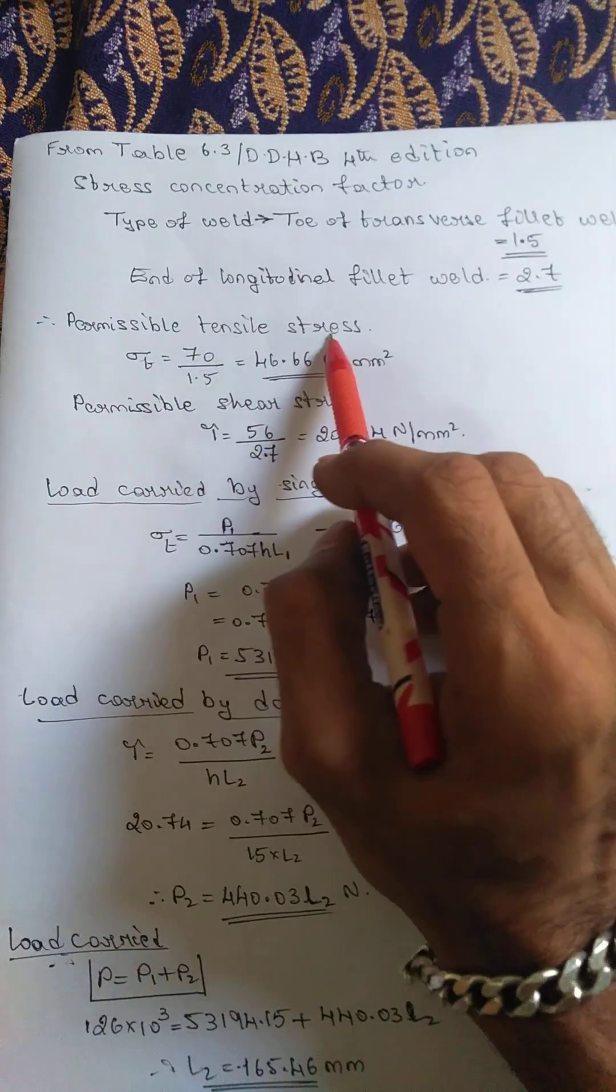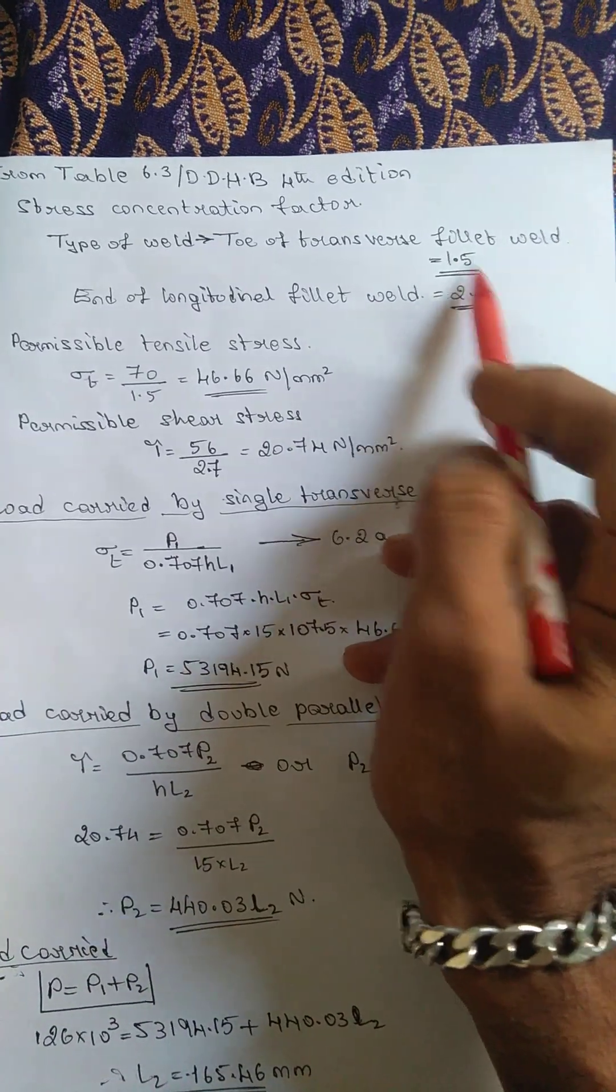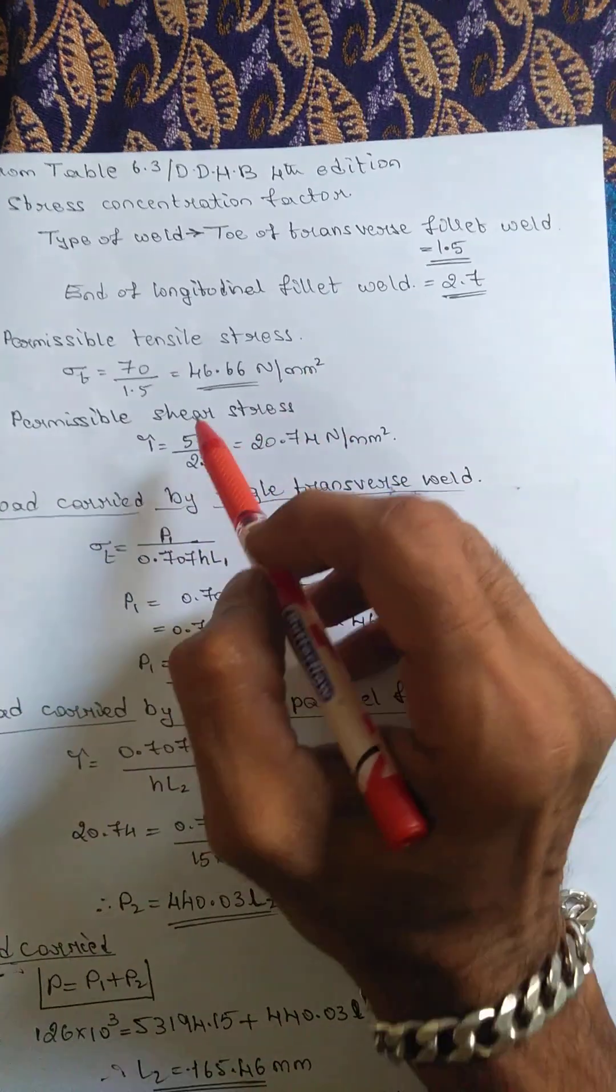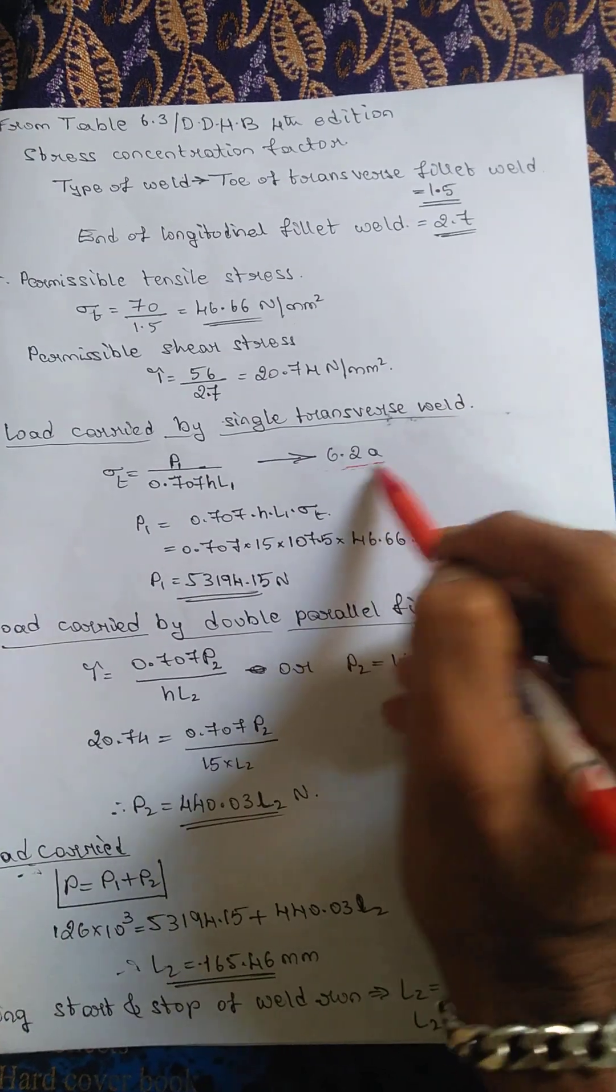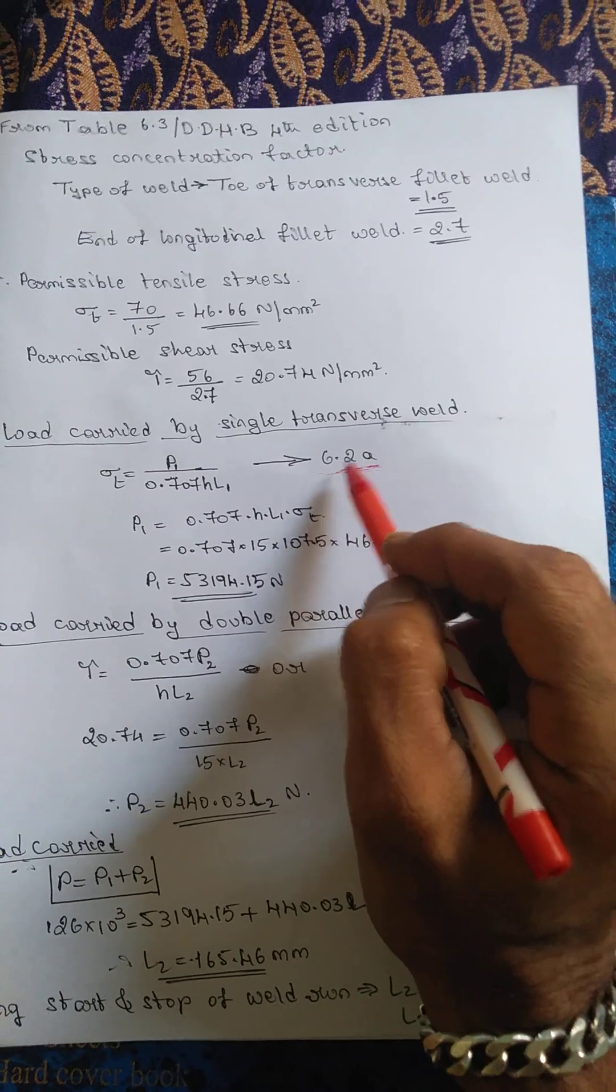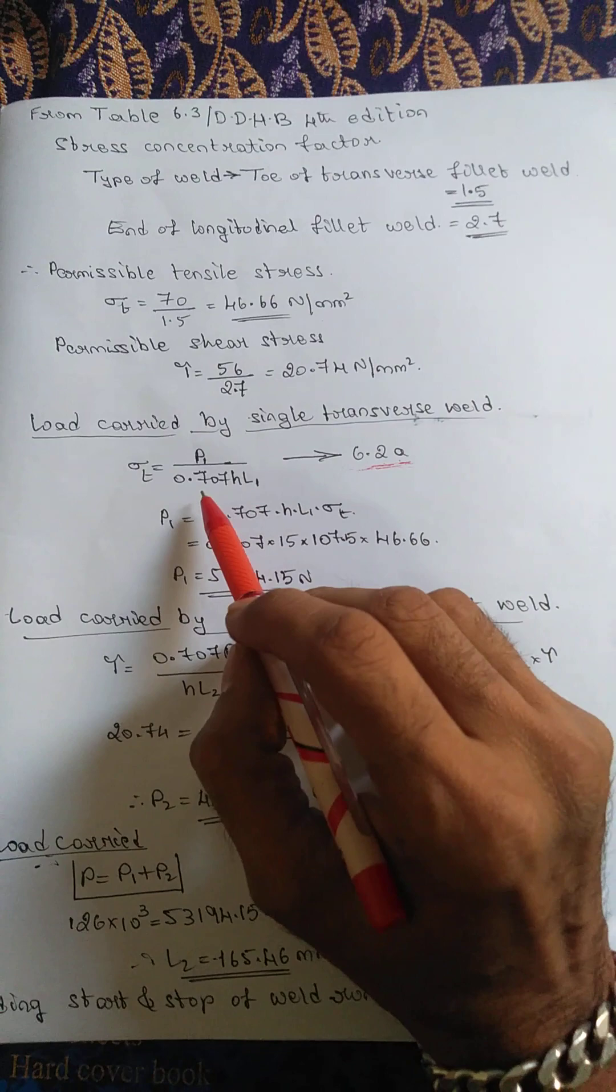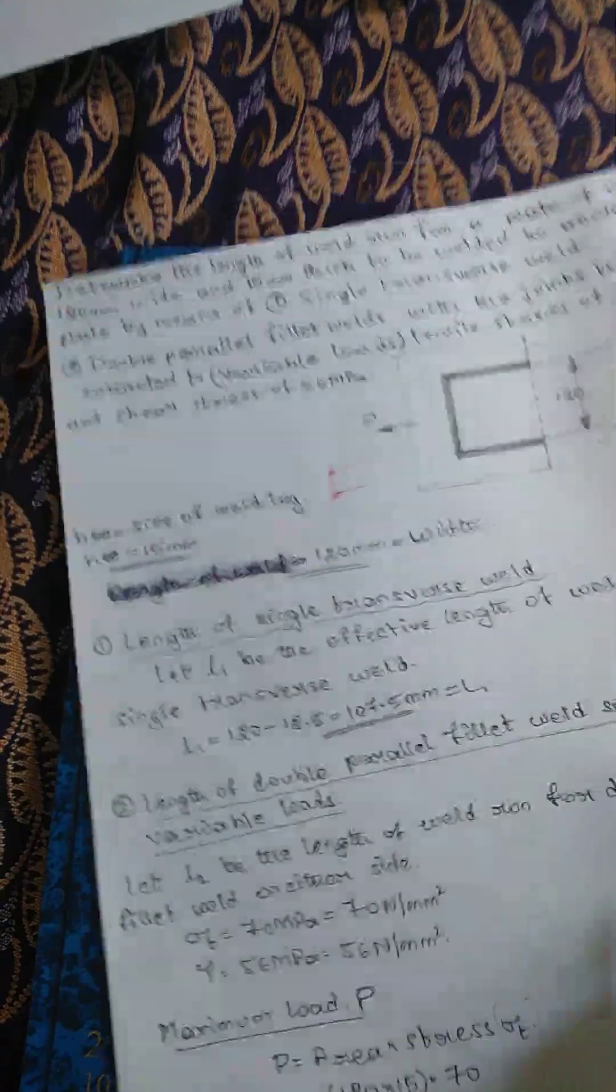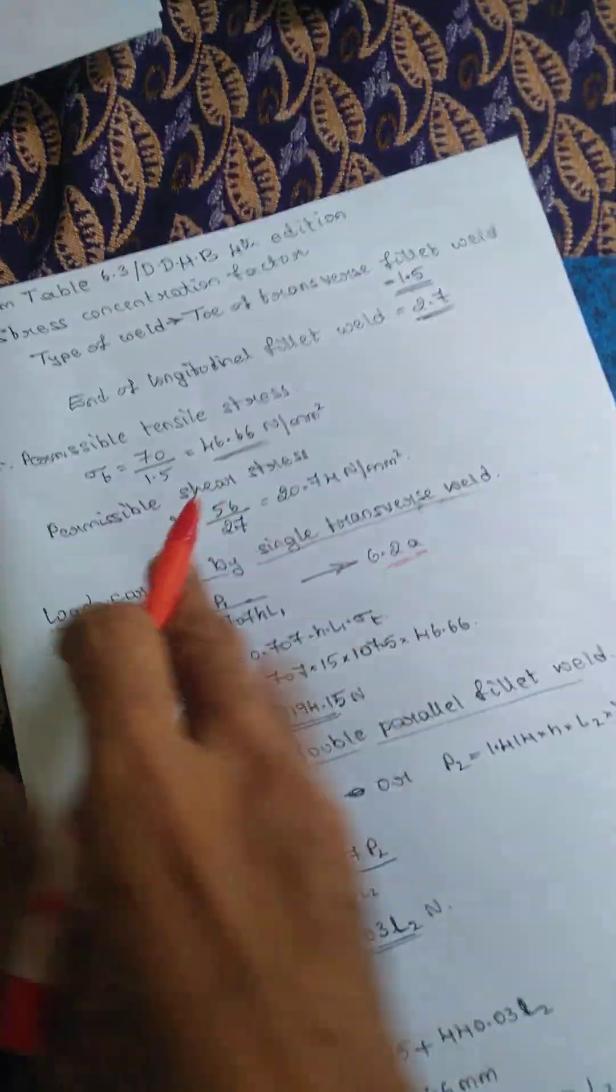Next, permissible stress is given in order to get permissible stress like factor of safety. Sigma t is 70 divided by 1.5, and similarly for tau. Next equation is from design data handbook, chapter, equation number 6.26, equation 2a. This is the given equation.